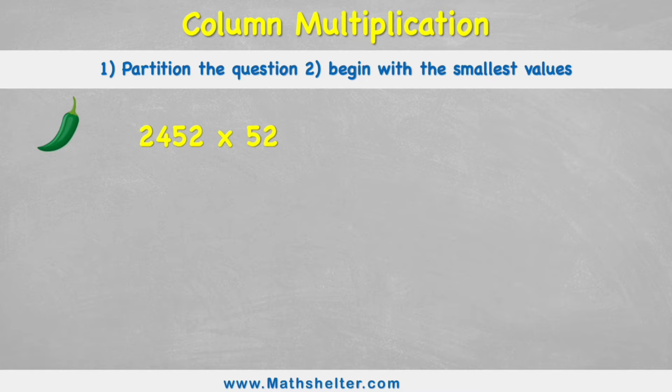Our two tips for today are number one, we're going to partition the number to help us answer it, and we're going to begin with the smallest values. So because we're using column multiplication, I need to get my columns ready. I'm going to start by doing my column titles. So I have ones, tens, hundreds, and thousands.